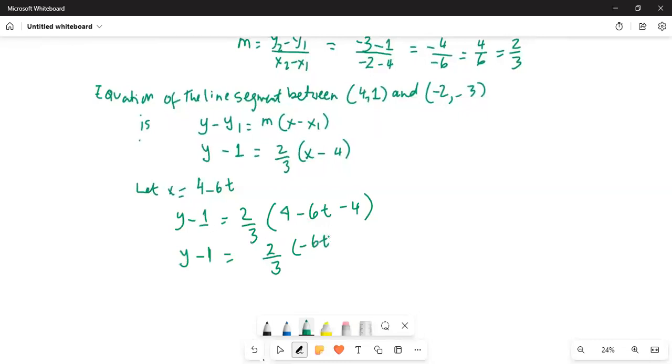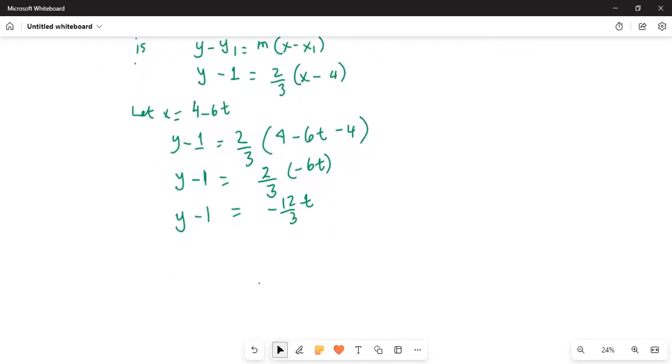So y minus 1 is equal to 2 times minus 6 is minus 12 by 3t. And if you push this upwards, then we have y minus 1 is equal to minus 4t, or you add one on both sides you get y equal to minus 4t plus 1.